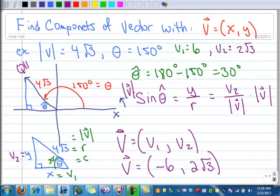There you go. So, there's the components of the vector negative 6 in the x direction. And 2 times the square root of 3 in the y direction.